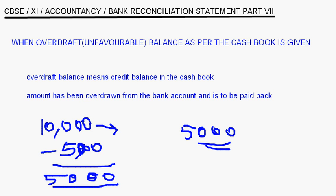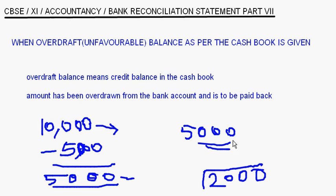Now suppose you issue checks worth two thousand rupees. You don't have any balance in your bank — this is an unfavorable overdraft balance — but issuing this check adds to the overdraft. So the balance of five thousand becomes seven thousand. Whatever money is deposited into the bank reduces the overdraft balance, and whatever you withdraw or checks you issue adds to the overdraft balance.